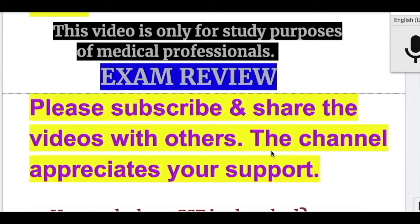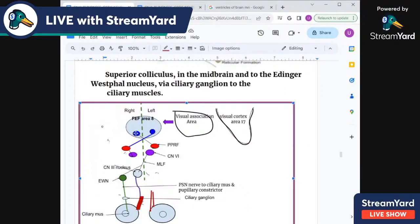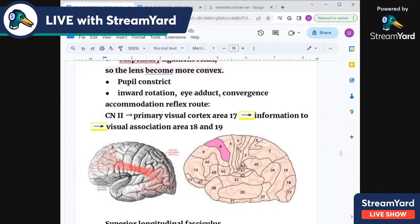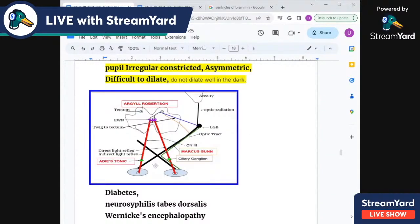In this video we'll do an exam review on control of the accommodation reflex by frontal eye field area 8. The pupillary light reflex is absent in Argyll Robertson pupil, but the accommodation reflex is present. Why is it so?